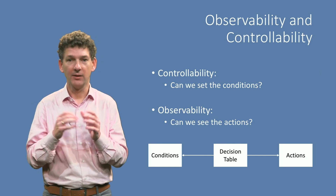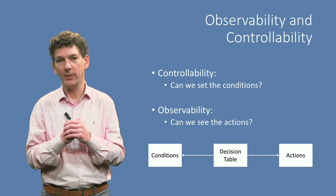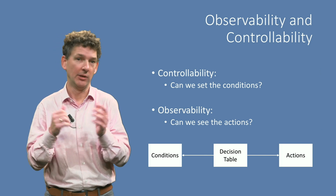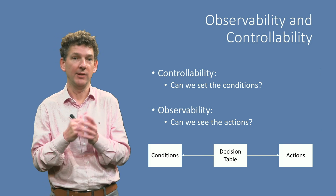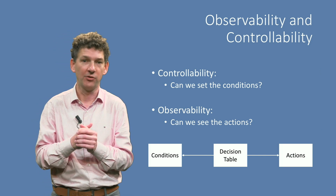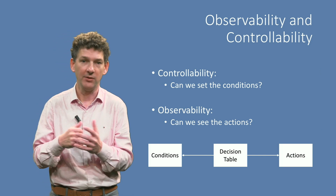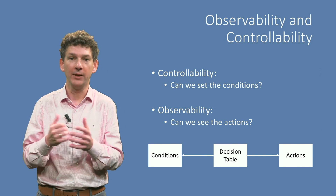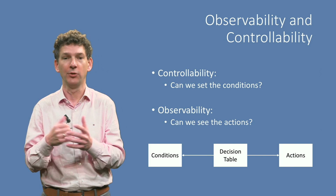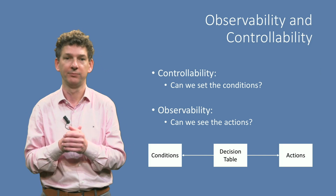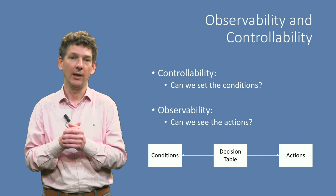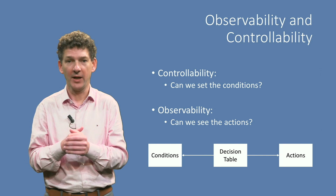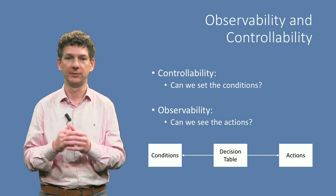Second, the outcomes may not be simple return values. Instead, they may be events or method invocations that do something but may not necessarily return a value. In other words, the resulting effects may be hard to observe.